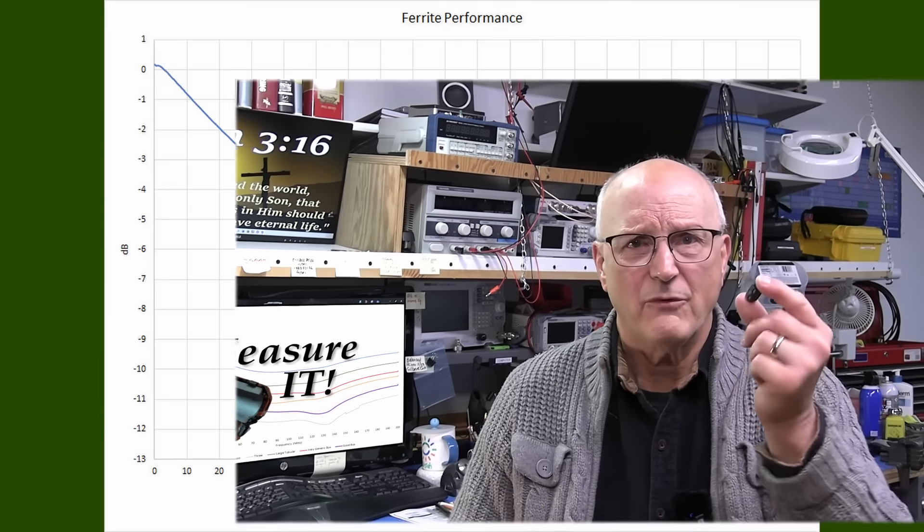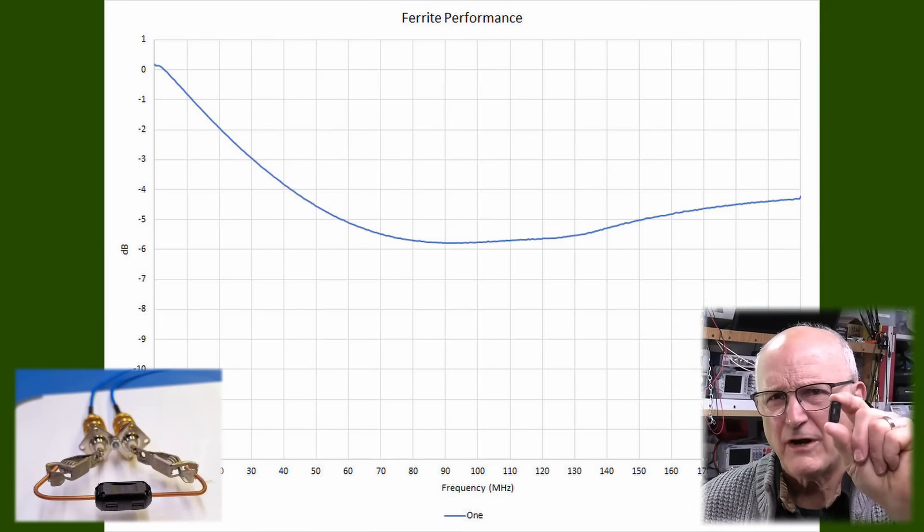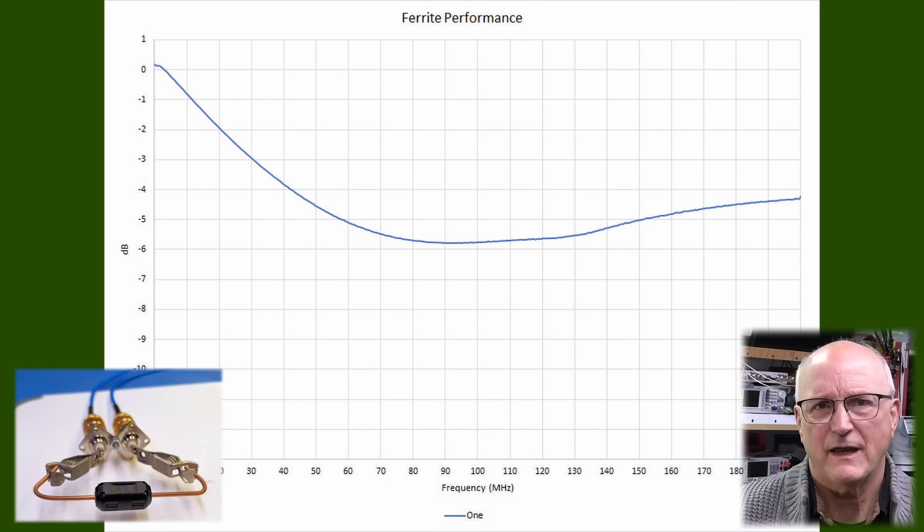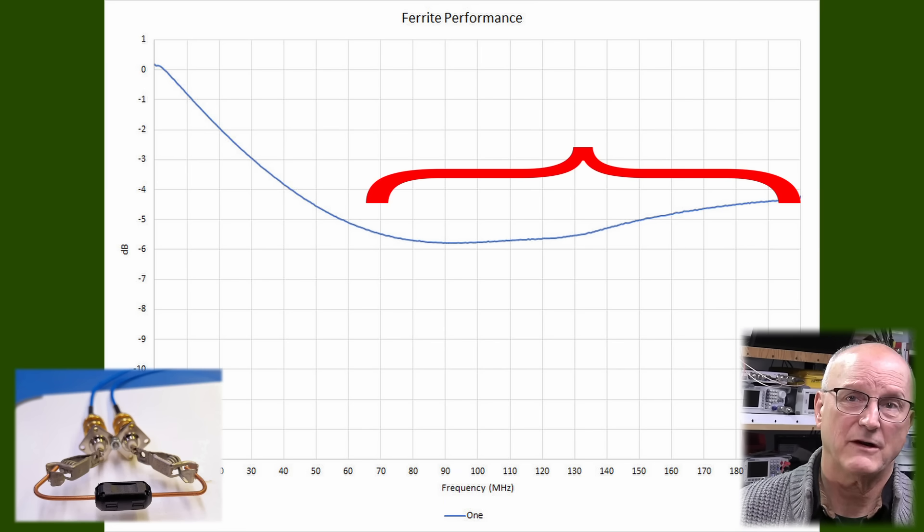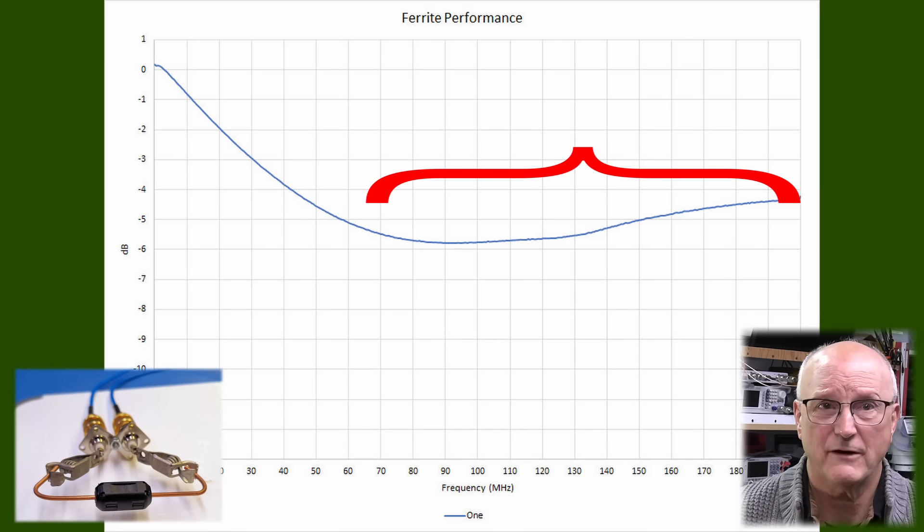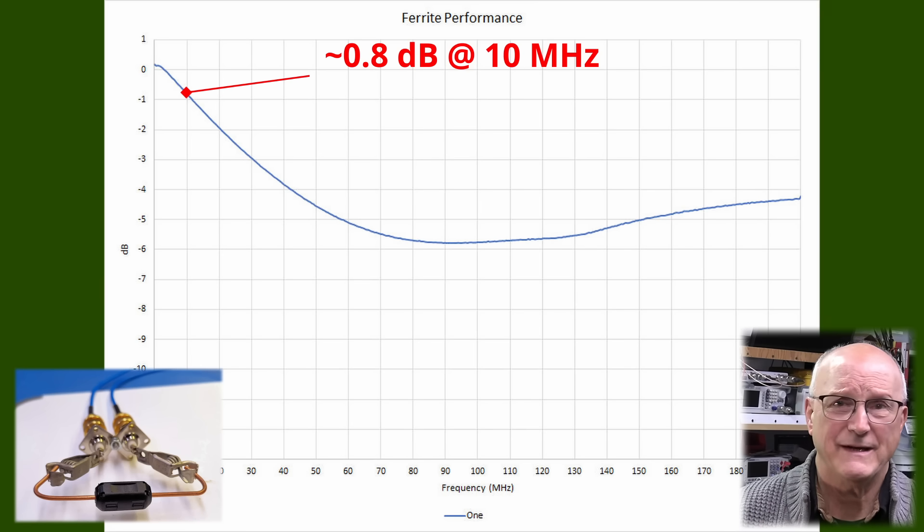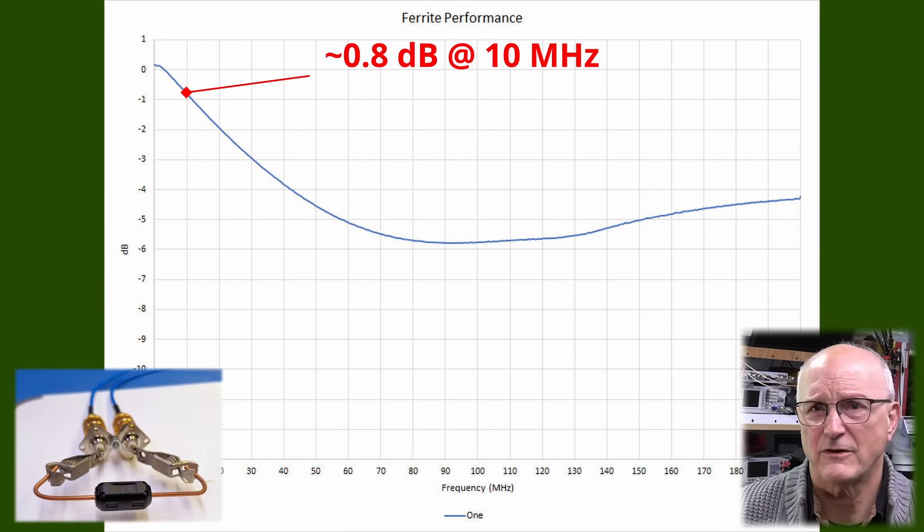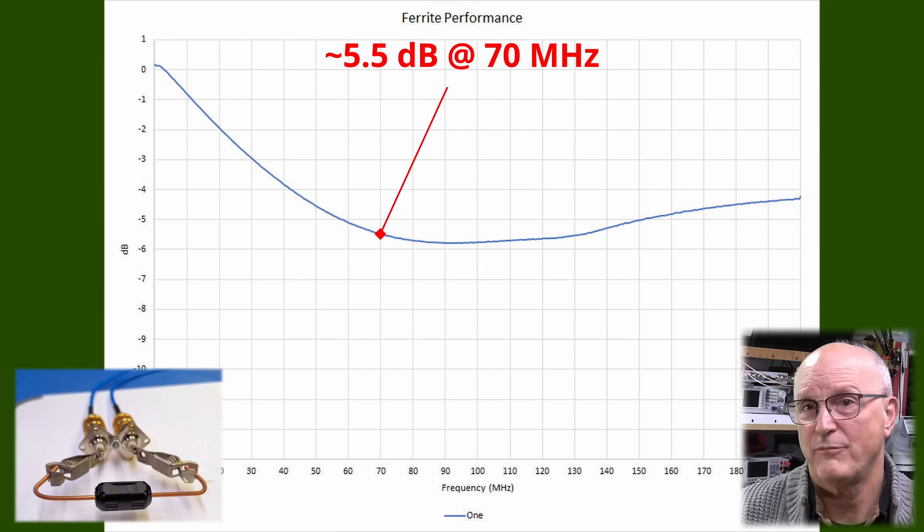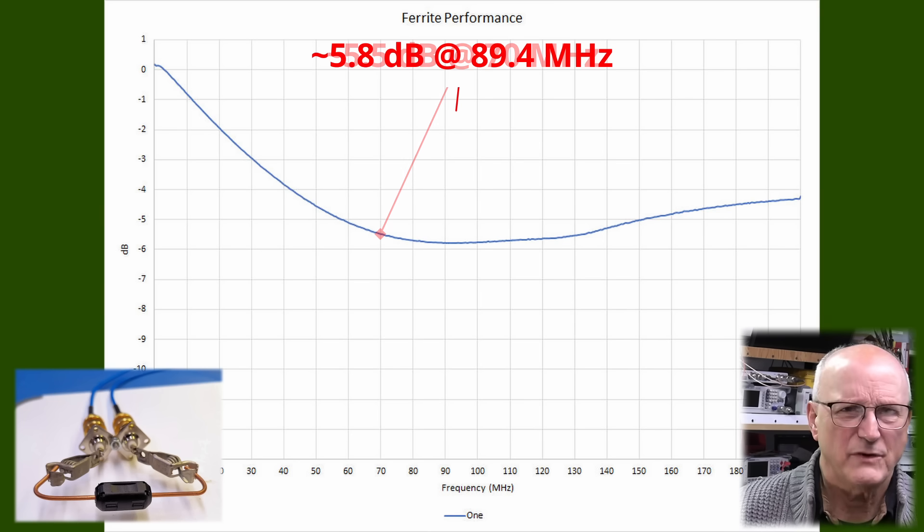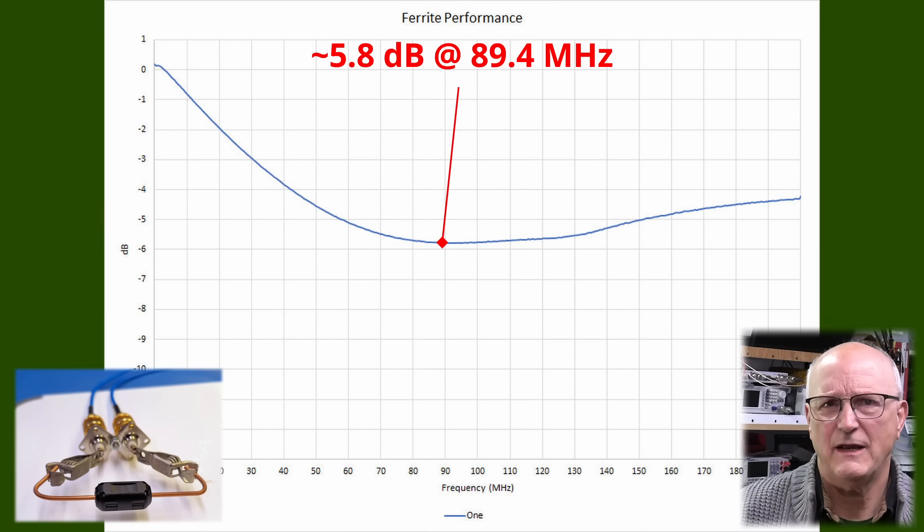Here is what we got with one of my smallest generic tubular ferrite beads. We can see here that it has a fairly flat benefit from 70 MHz all the way up to 200 MHz. The benefit isn't too impressive at about 0.8 dB at 10 MHz, moving toward 5.5 dB at 70 MHz. The best we do is 5.8 dB at 89.4 MHz.